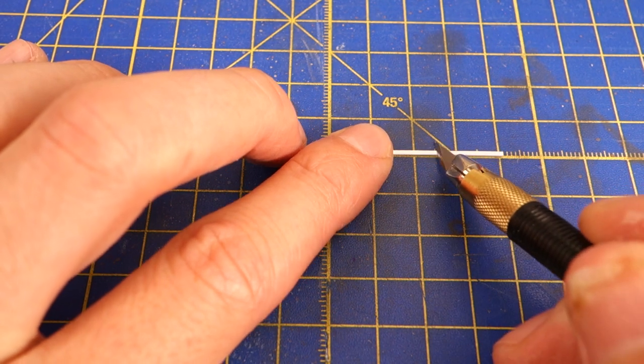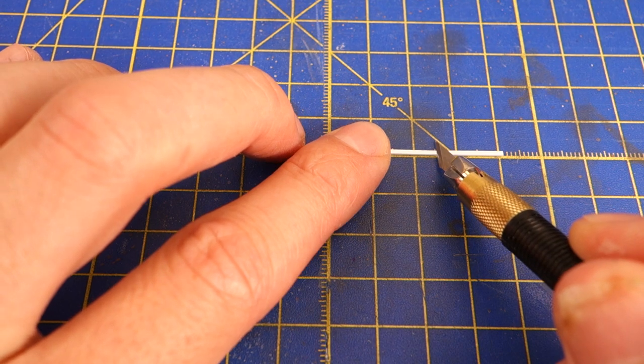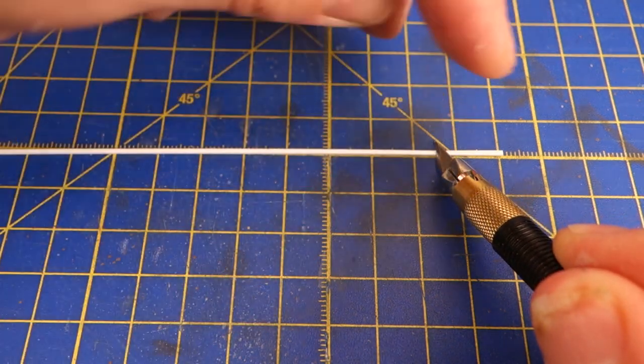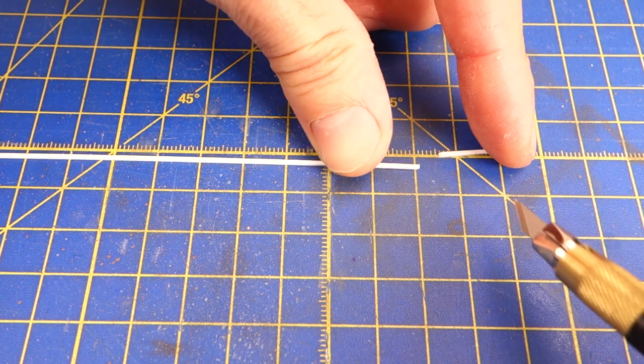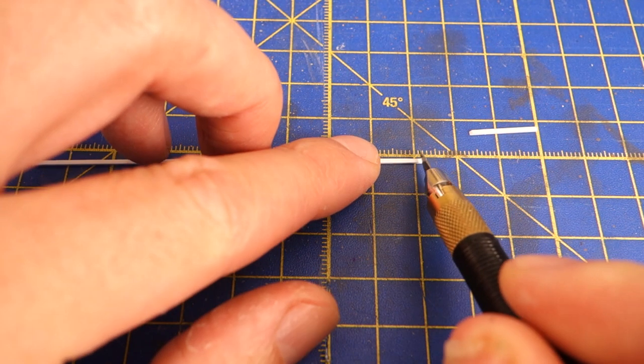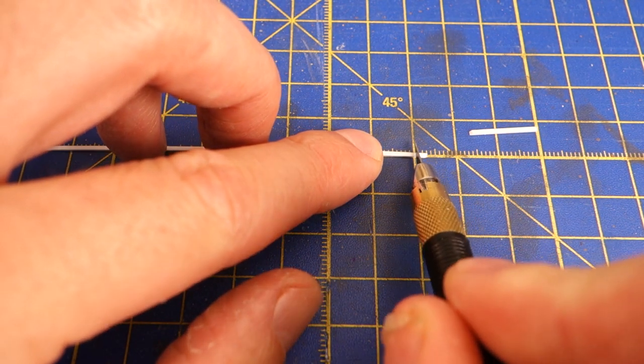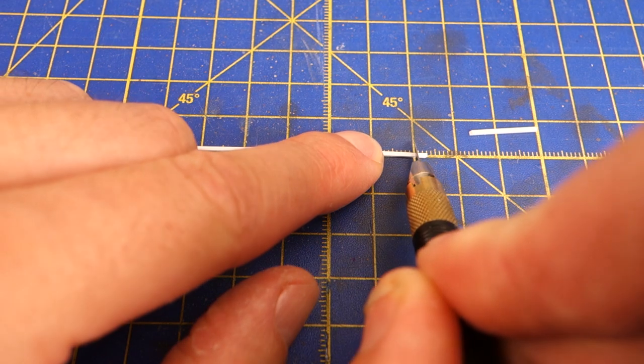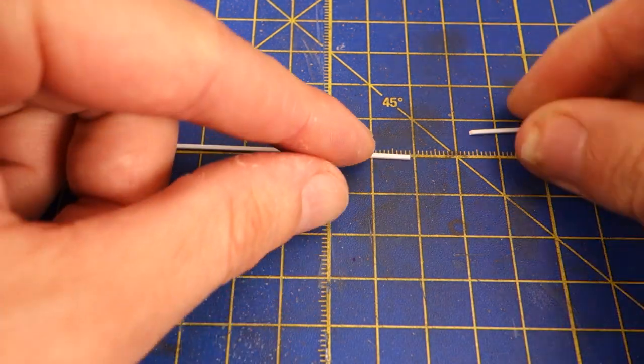Since I went through the trouble of building gutters for the roof of the larger structure I also wanted some downspouts as well. I also wanted them to angle away from the building at their bottom ends. I built the downspouts from Evergreen 132 styrene strips. First I cut a short piece at an angle of about 30 degrees.